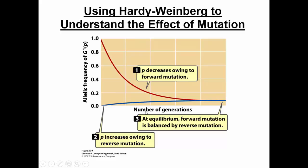This schematic shows that eventually we're going to reach an equilibrium between forward and reverse mutation rates.